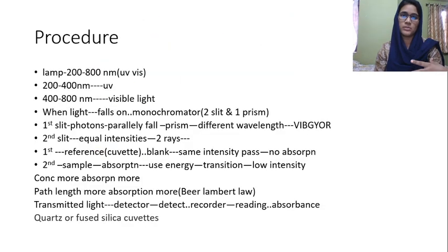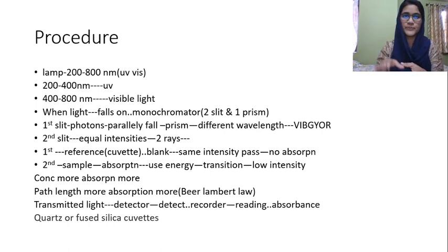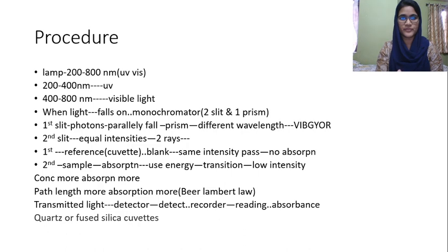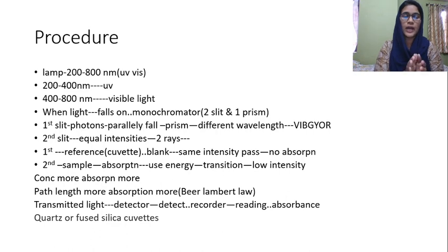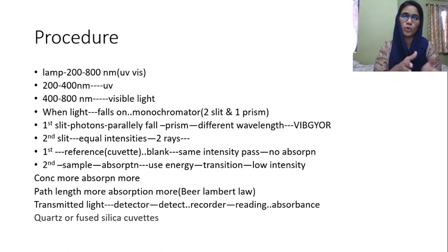We have a wavelength range of 200 to 800 nanometers. First, light hits the monochromator. Then different wavelengths are split by the second slit at equal intensity. In the reference, the blank solution will have the same intensity, while the sample solution will have lower intensity.